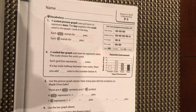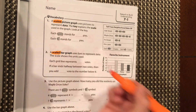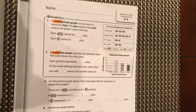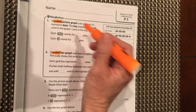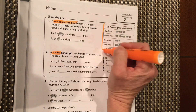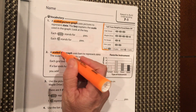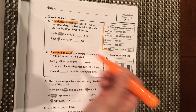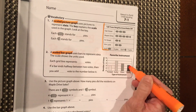The word 'scaled' means a sign represents or stands for something else. A scaled picture graph is a picture graph where a picture represents the numbers. A scaled bar graph is when we fill in bars to represent the numbers.